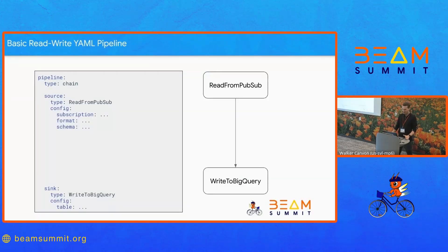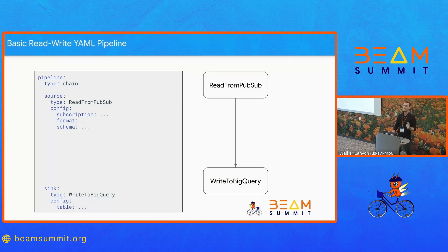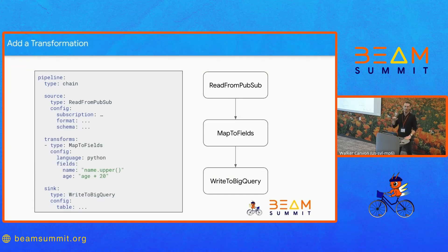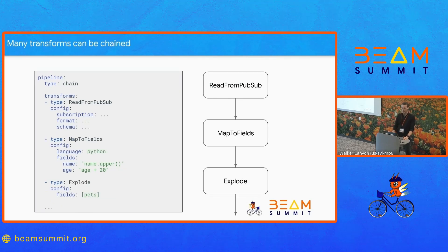Let's get started with a very simple example. Say I have a PubSub to BigQuery pipeline, as visualized on the right. I can specify my source — read from PubSub — and my sink — write to BigQuery. Every transform will have a configuration; for PubSub it might be your subscription, your format, your schema, and for BigQuery your table or your query. Unlike a template which would only ever do PubSub to BigQuery, I can shove a transform in between with relative ease — I just add a new block and it should just run. Many transforms can be chained, so I can make this as long as I want, just keep specifying the type of transform.